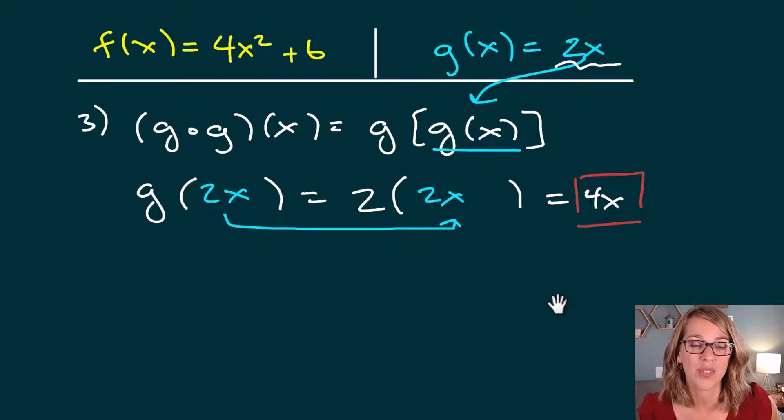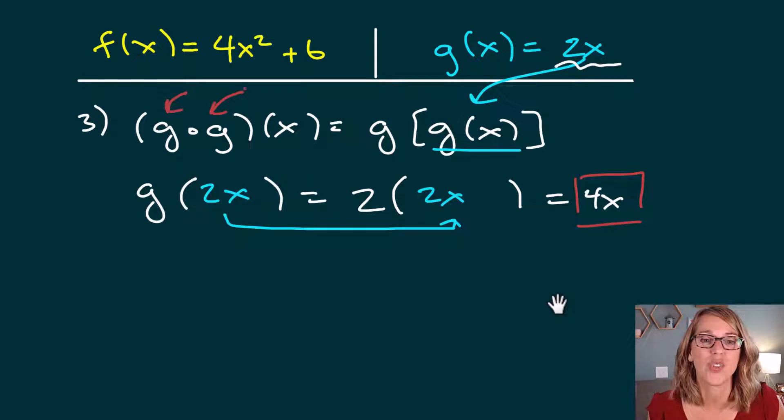g multiplies stuff by 2. I'm applying g not 1 time, but 2 times. So I'm not multiplying by 2, but I'm multiplying by 2 times 2, which is 4. Let's do one more with this pair.